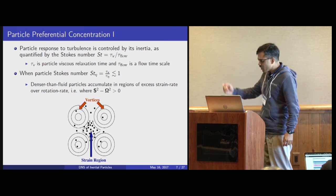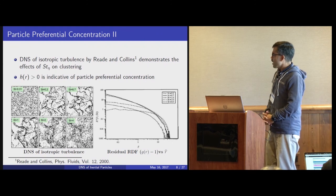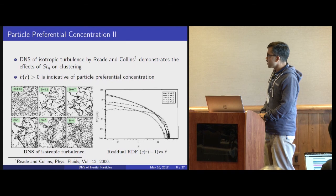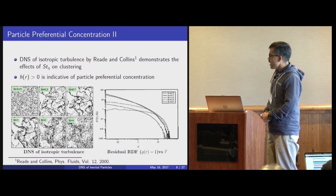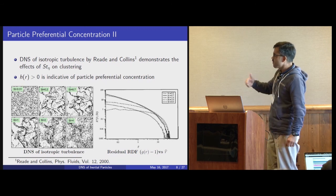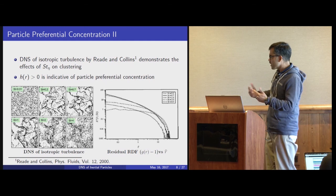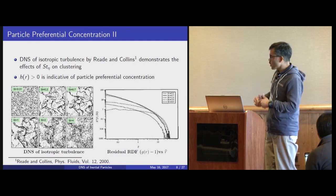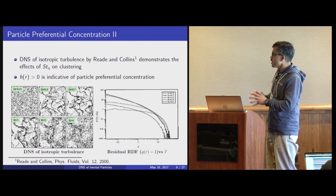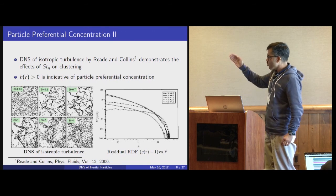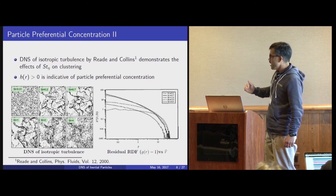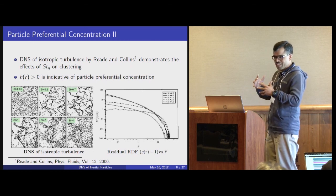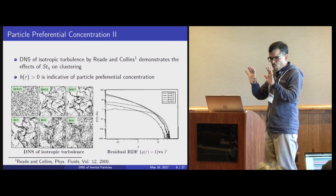Here we have DNS — direct numerical simulation — evidence of inertial particle clustering in isotropic turbulence, from the well-known study by Reed and Collins. The picture to the left shows the effects of particle inertia on clustering. When Stokes number is 0.01, the particles closely follow the fluid, so there is no clustering. However, as you increase the Stokes number progressively, clustering increases and peaks around a Stokes number of 0.7. As you increase the Stokes number beyond 0.7, clustering reduces, and when Stokes number reaches 4, particles move toward a more random distribution.